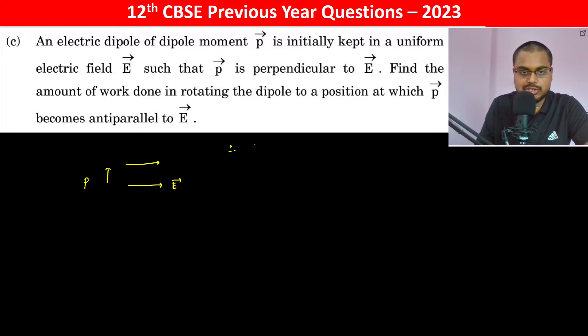Therefore, initial potential energy is minus P dot E, which is minus P E cos of 90 degree. The cos of 90 degree is actually zero, so the initial potential energy is zero.